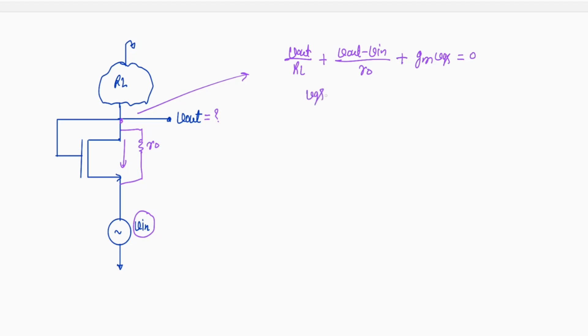So what will be the Vgs value here? Vgs is Vg minus Vs. So Vg gate voltage is Vout and Vs is Vin. So we will put in this equation. This will be Vout by RL plus Vout by R0 minus Vin by R0 plus Gm.